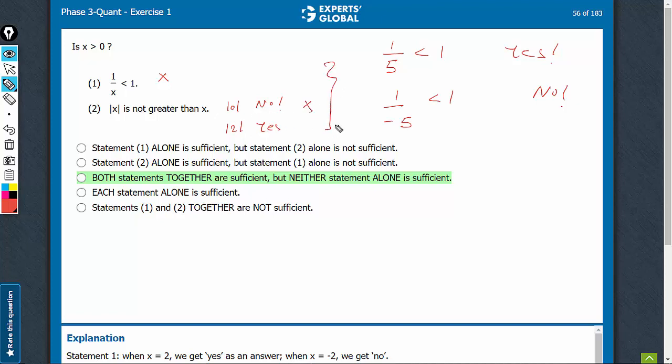On combining, what do we get? On combining, we know that in statement 2, there was only one exception, that is when x is equal to 0, which will not fulfill the condition that 1 upon 0 is less than 1.